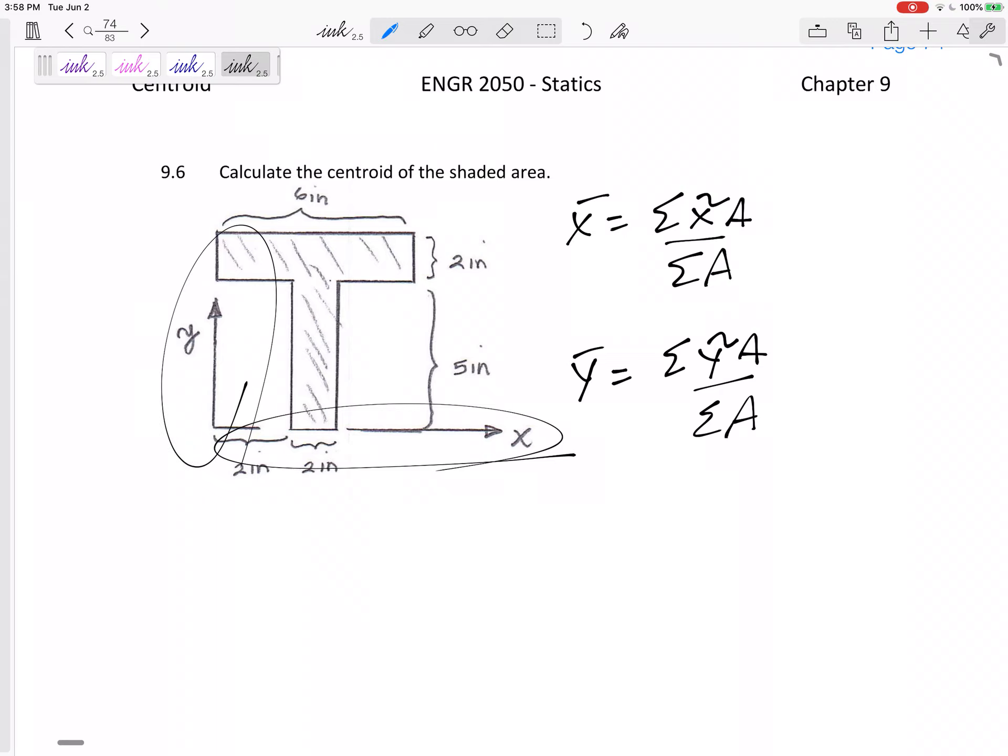This one, the axes are given to us. Many times axes aren't given, and so you can choose your own axes. Sometimes it might be helpful to define your axes like y goes through the middle and x goes through here. Just be sure that when you're giving me the centroid, tell me I'm measuring from the bottom, I'm measuring from the left. But if the axes are already drawn on there for you, then they're great. Let's measure them from these axes.